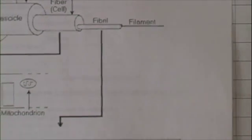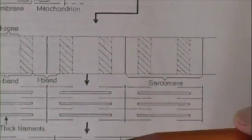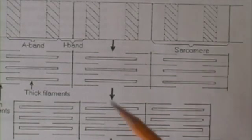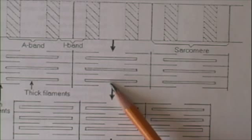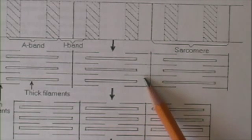If we look inside the fibril, we can see that there are essentially two types of filaments. Bigger ones, called thick filaments, and thinner ones, called thin filaments.